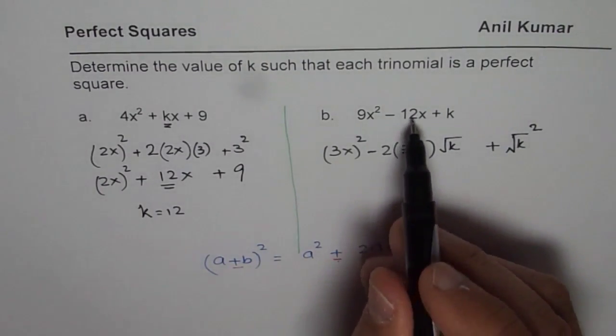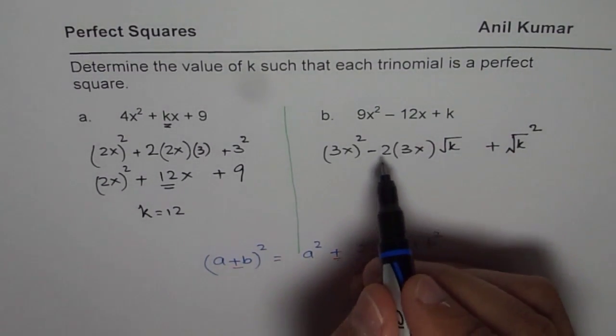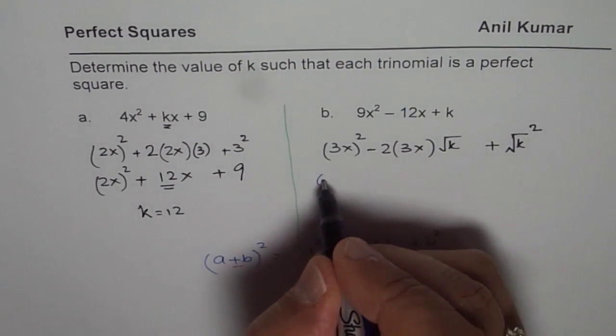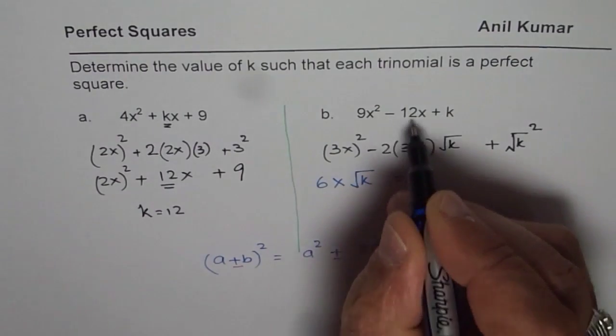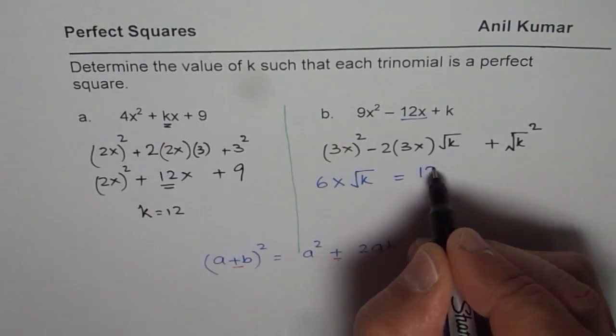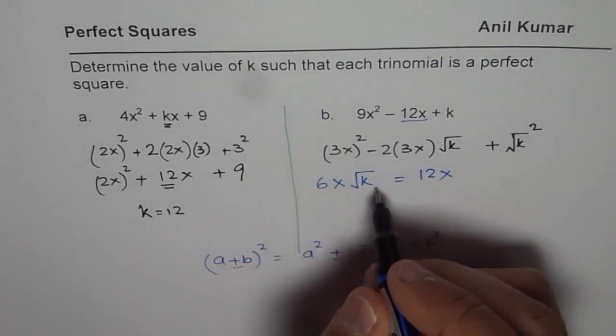Now comparing these two, what do we get? We get 2 times 3 is 6. We get 6x times √k should be equal to 12x. Now that means,